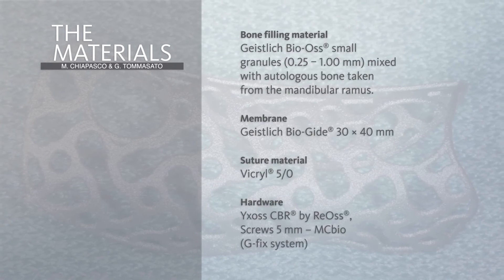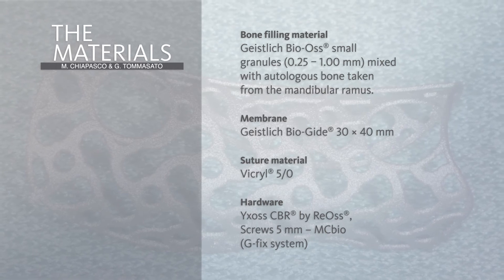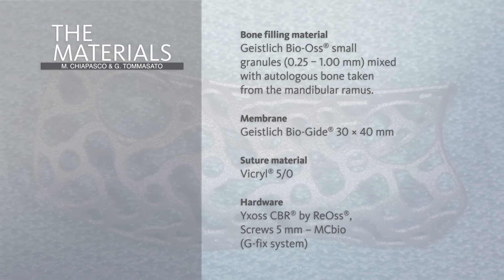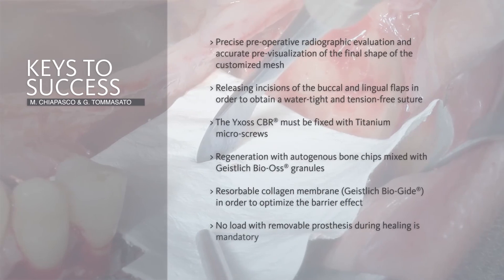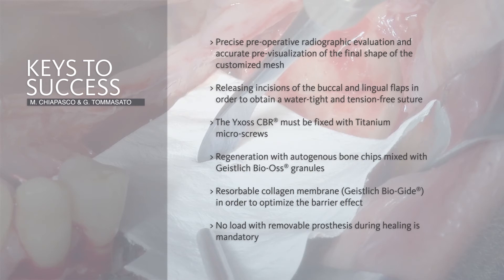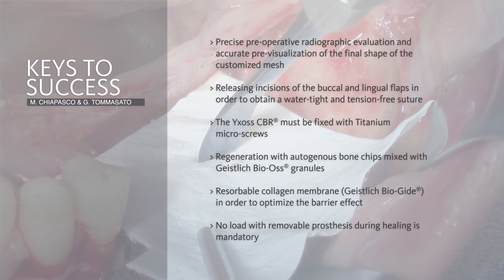The density of the bone is really excellent and out of 18 cases treated until today, in none of the cases was the quality of the bone poor. To summarize, the keys to success consist of: a precise preparative radiographic evaluation and accurate previsualization of the final shape of the customized mesh; special care in managing the soft tissues with a good releasing incision on both the buccal and lingual flap to obtain a watertight and tension-free suture; very good stabilization of the titanium mesh with micro-screws; and the cocktail of autogenous bone chips with Geistlich BIOS granules at a 50% to 50% ratio.